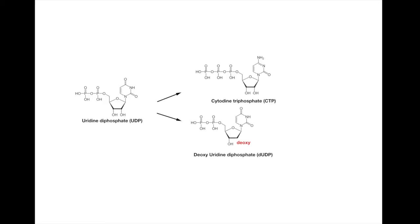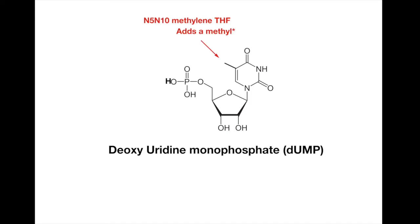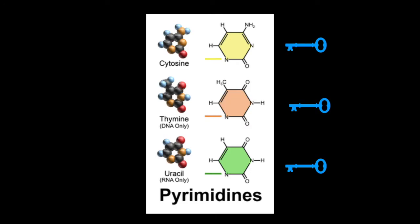Or dUDP, deoxyuridine diphosphate, by the enzyme ribonucleotide reductase. dUDP can be dephosphorylated into dUMP and then converted into dTMP, or deoxythymidine monophosphate, by thymidylate synthase, which synthesizes our third and final pyrimidine thymine.